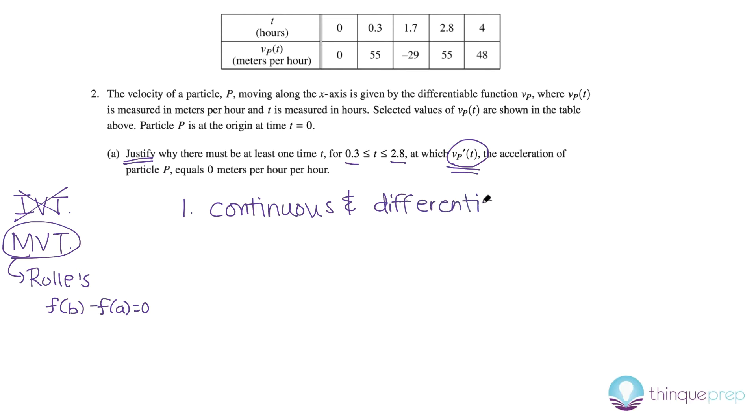So, if we're looking at the opening of the question, it says that the velocity of the particle p is given by the differentiable function, v of p. Well, you need to know that if a function is differentiable, then by definition it is also continuous. So, we've checked off that category.